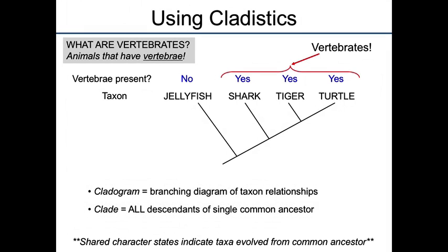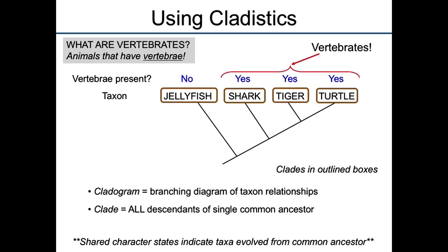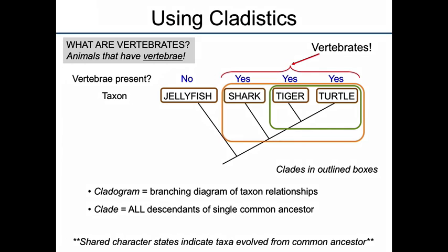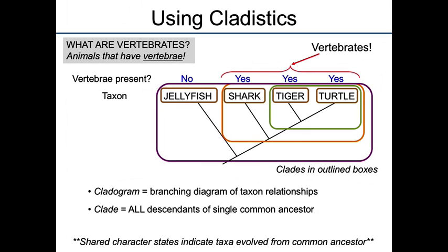When we say the word clade, we just mean all of the descendants of a single common ancestor. If we look at these images here, everything outlined in a box is a clade. We could also draw a box around this chunk here — remember the node tells you common ancestor, that is a clade. We could also draw a big box over all of these, and that would also be a clade.